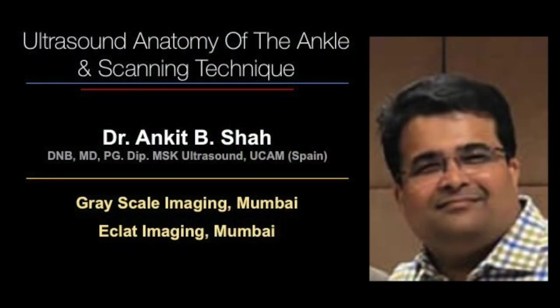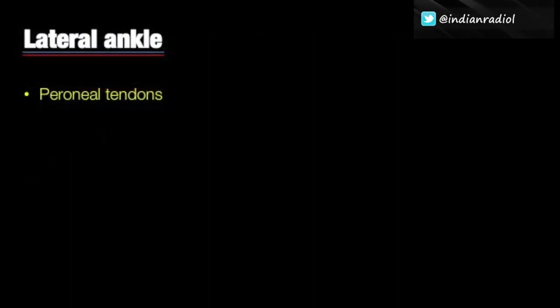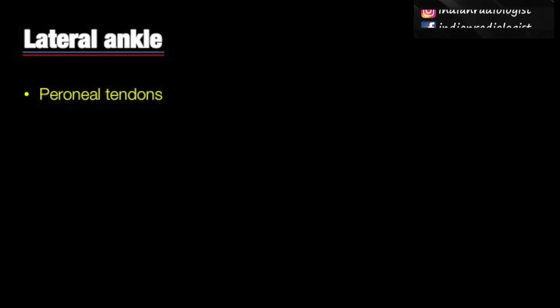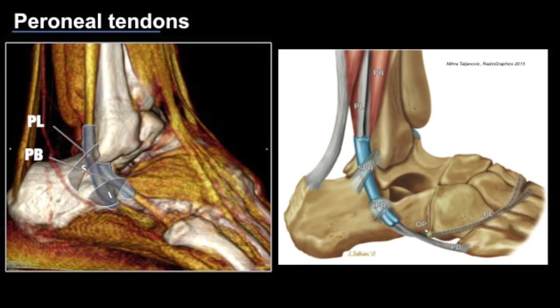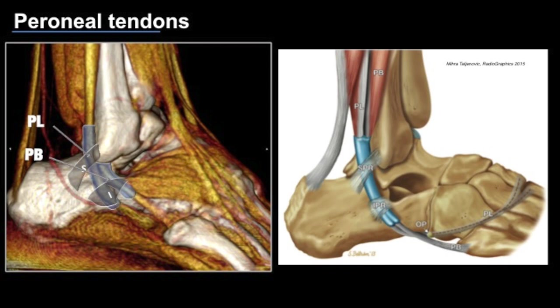Coming to the lateral quadrant of the ankle, we are left with the peroneal tendons. Before we begin with assessment, let's revise our bony landmarks: the lateral malleolus, the peroneal tubercle, and the base of the fifth metatarsal. This is a volume rendered image showing the peroneus brevis tendon and the peroneus longus tendon.